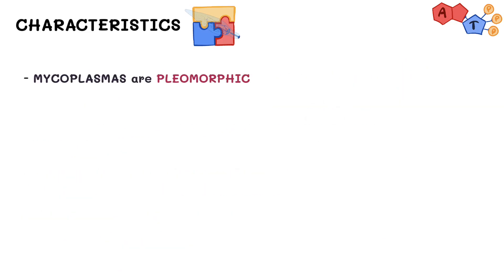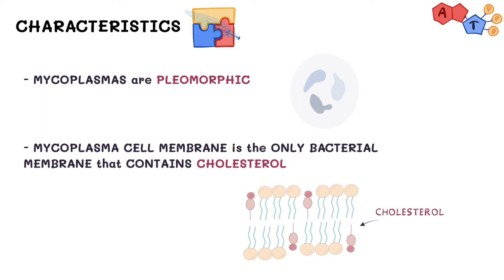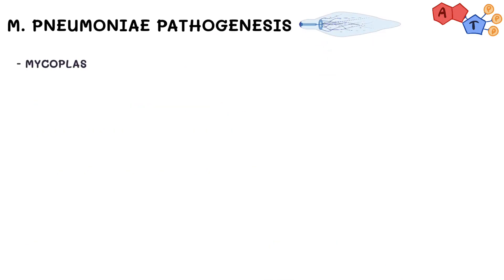Mycoplasmas are pleomorphic, meaning that they can assume a variety of shapes because of their flexible cell membrane. Another characteristic of their membrane is that it's the only bacterial membrane that contains cholesterol.